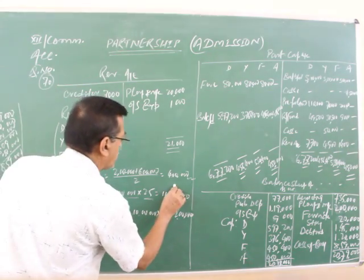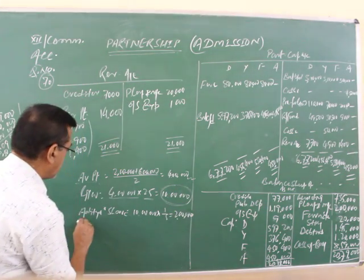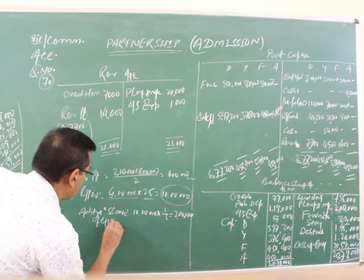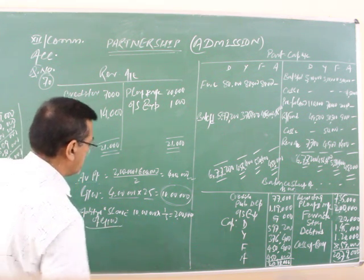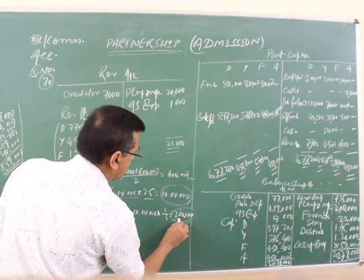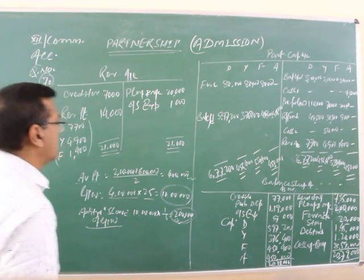Total goodwill of the firm is coming ten lakhs. After this Adit is admitted in the business one-fifth, so it is coming two lakhs. Point is clear.